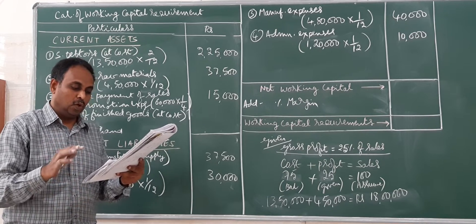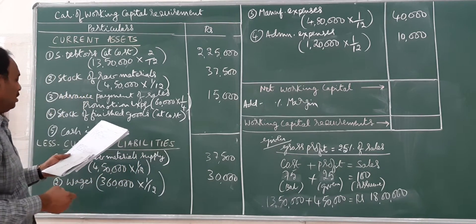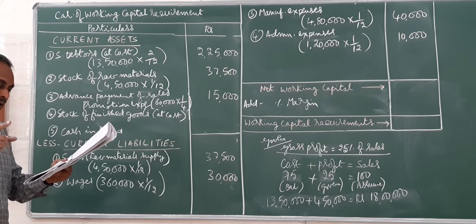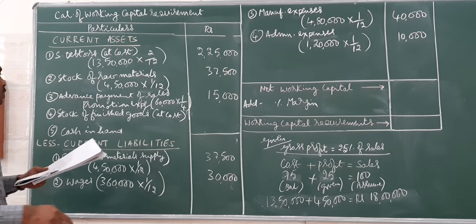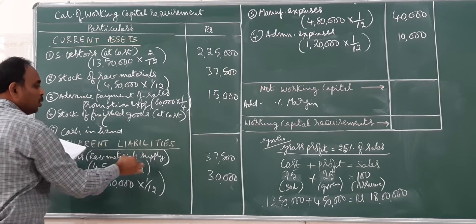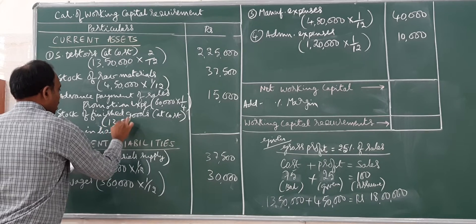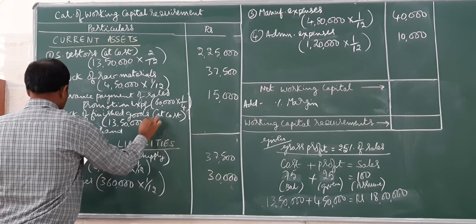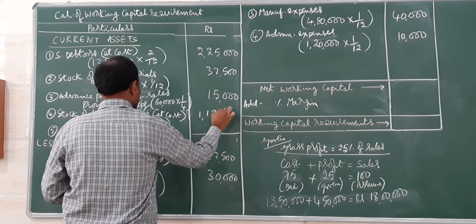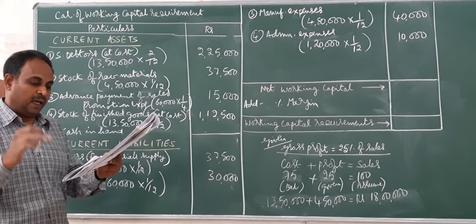The company keeps one month stock of raw material and finished goods. Raw material stock we have done. Now finished goods, which is always at cost: 13 lakh 50,000 into 1 by 12 equals 1 lakh 12,500.